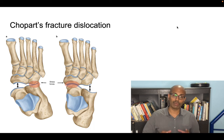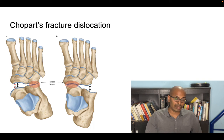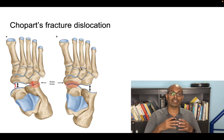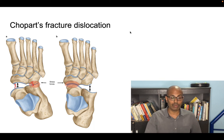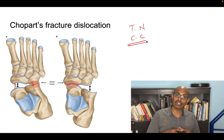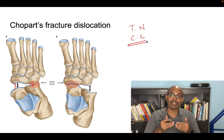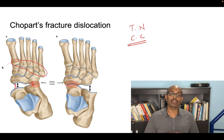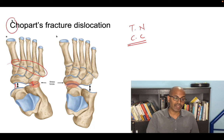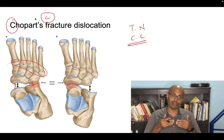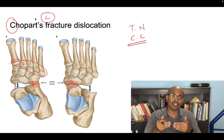Chopart fracture dislocation is through the Chopart joint, which is the mid-tarsal joint — between the talus and navicular, and the calcaneum and cuboid (talonavicular and calcaneocuboid joints). Lisfranc fracture dislocation is the dislocation at the tarsometatarsal joint. A useful memory aid: C comes before L in the alphabet, so Chopart's dislocation is more proximal (mid-tarsal) and Lisfranc dislocation is more distal (tarsometatarsal).